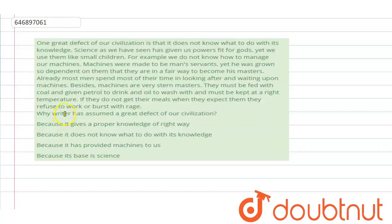Let's go through the question once. Why writer has assumed a great defect of our civilization? Why did he assume it? So, let's quickly go through the options. Option A is because it gives a proper knowledge of right way. No. This is incorrect.